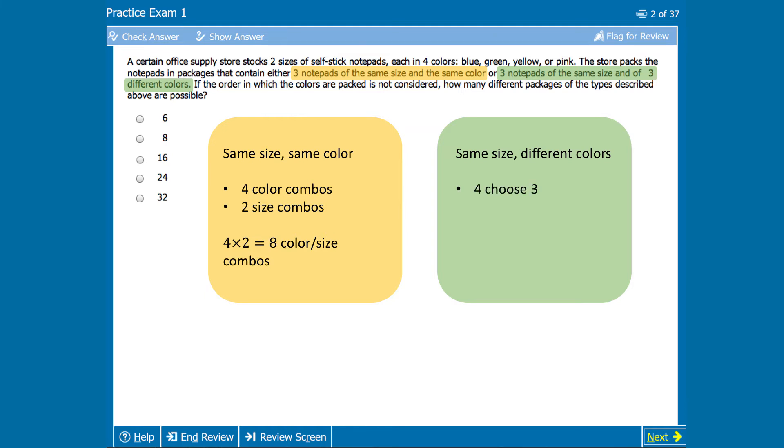Now, since our total is pretty small, and the number of items we're picking is large in comparison, we could pretty easily and quickly list out all of our options here. However, if we want to bust out that combination formula, now is the time. So four factorial over three factorial times four minus three factorial equals four. So there are four different choices for colors.